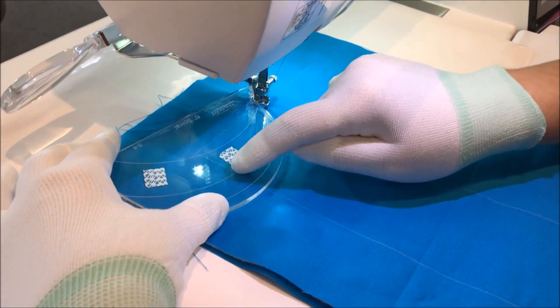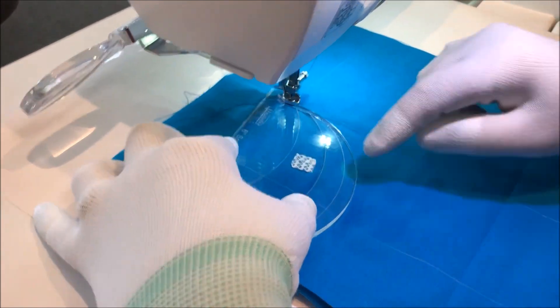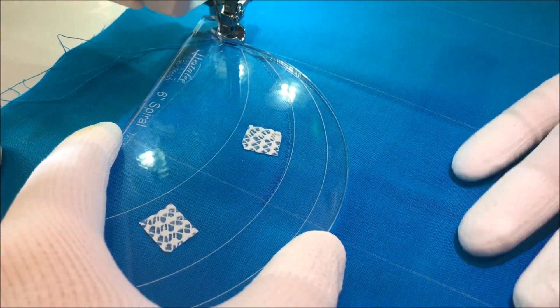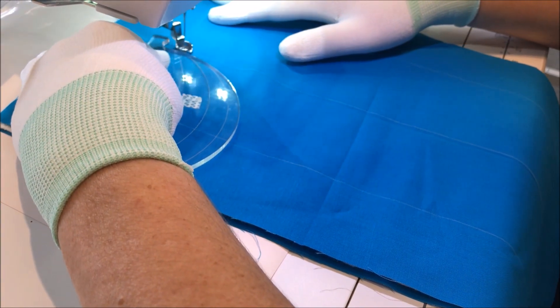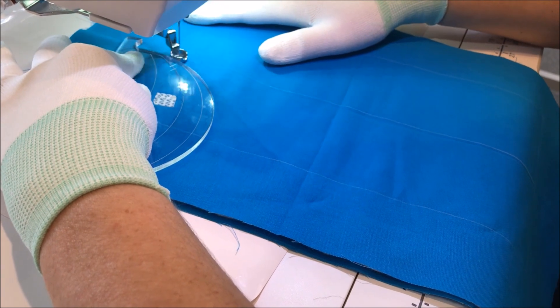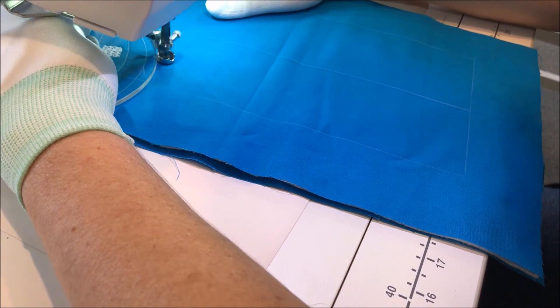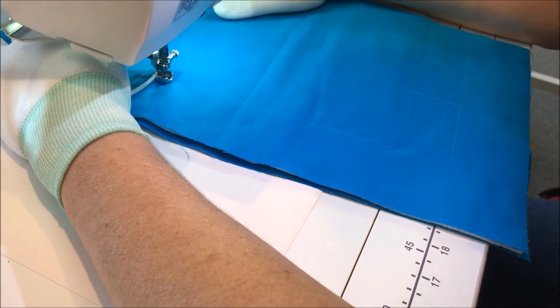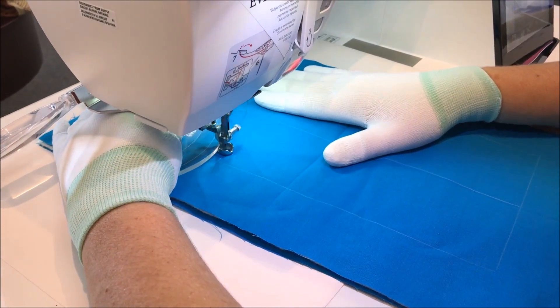Now we're going to use the second line. Turn the ruler in towards the center and line up the second line onto the stitches that you just made. We're going to do the same thing we did before and travel down towards the left. And now we're going to go backwards again, back towards the center.